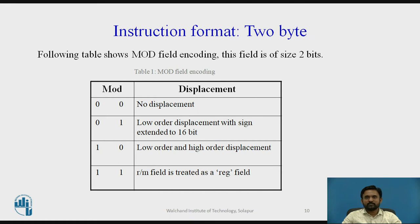These two bits are encoded as follows: if MOD equals 00, R/M is for memory with no displacement. If MOD equals 01, R/M is for memory with 8-bit displacement. If MOD equals 10, R/M is for memory with 16-bit displacement. And if MOD equals 11, R/M is for register.